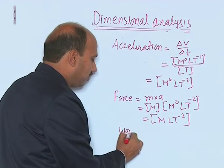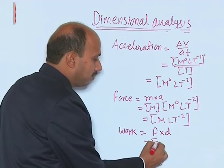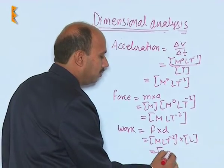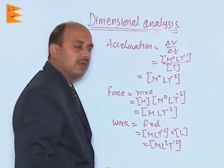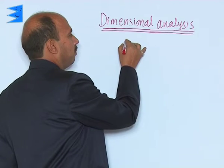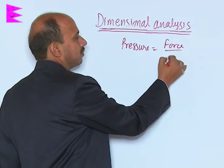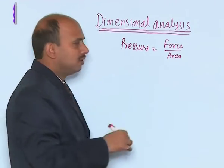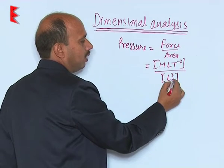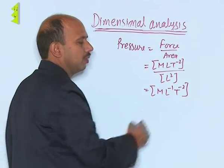The dimensional formula of work is force times distance: M L T⁻² × L = M L² T⁻². This is the dimensional formula of work. For pressure, which is force upon area: force is M L T⁻² and area is L², giving M L⁻¹ T⁻².